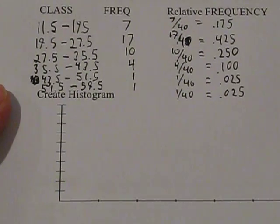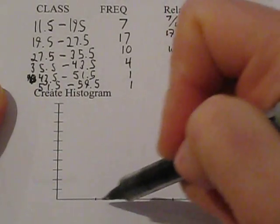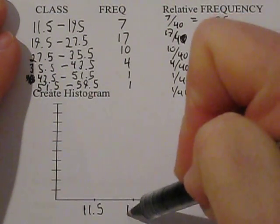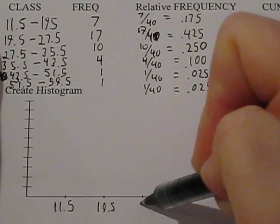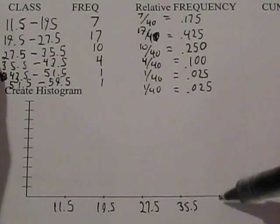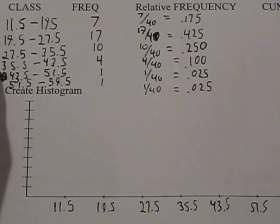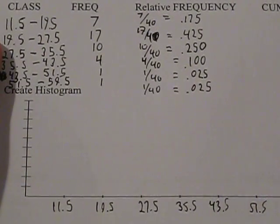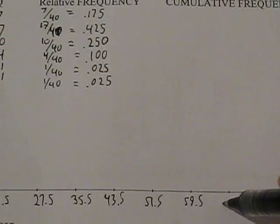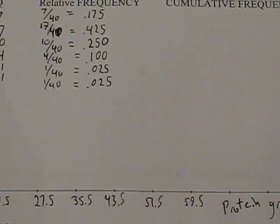I'm going to save our cumulative relative frequency until the end. Let's go to the histogram. Our histogram classes will go on our x-axis: 11.5, 19.5, 27.5, 35.5, 43.5, 51.5, and the upper bound 59.5. Make sure to label your axis - we're talking about protein grams in fast food.